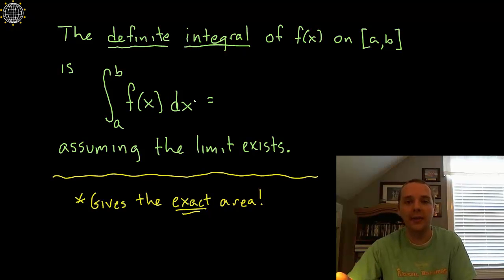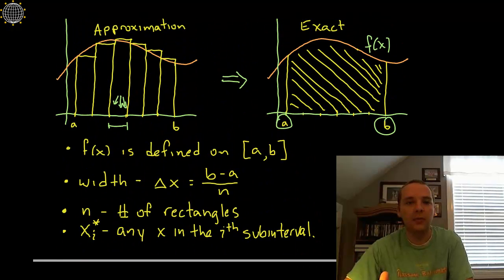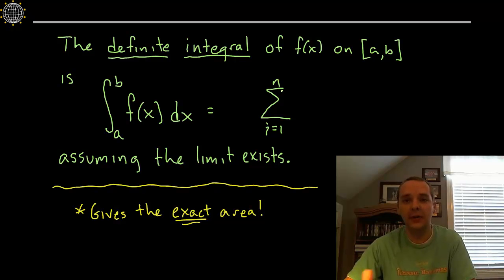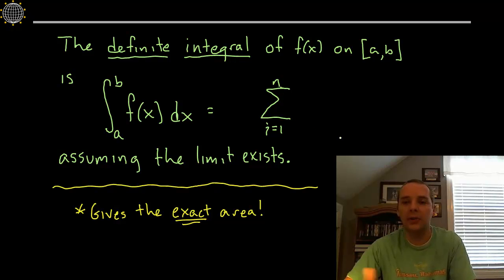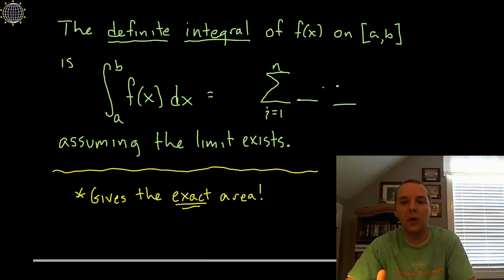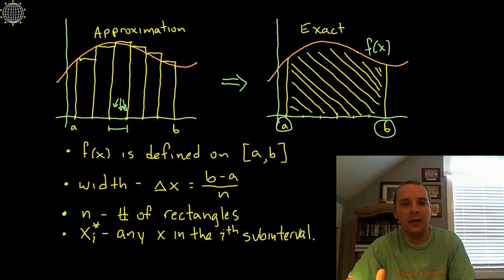How would you find this in theory? We're going to make a sum of the areas of each of these rectangles, like on the left-hand side. Here's summation notation: the sum from I equals one to N. N is the number of rectangles, so if you have six rectangles, this is the sum from one to six, adding up the six areas. Each rectangle's area is width times height. The width will always be delta X — that's B minus A over N — and the height changes depending on what interval you're in, going as high as the function F of X for each sub-interval.